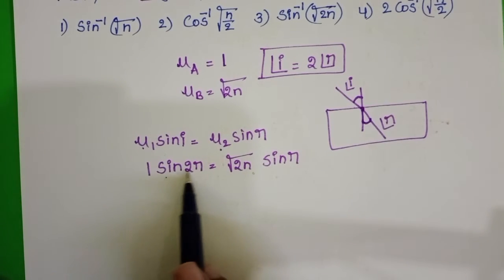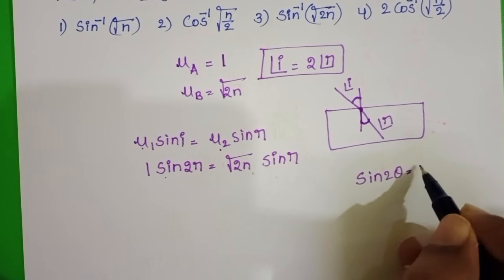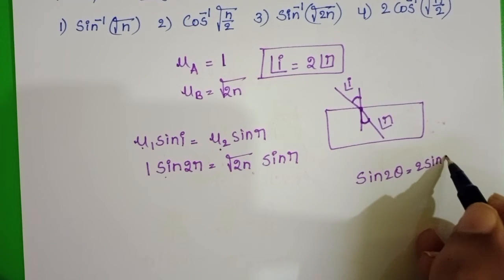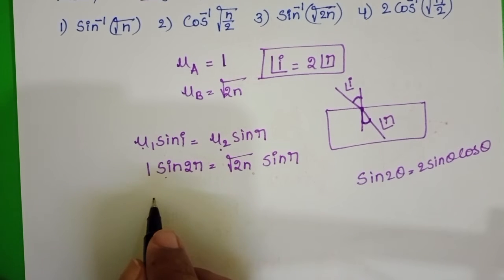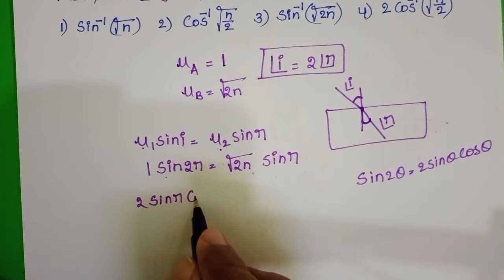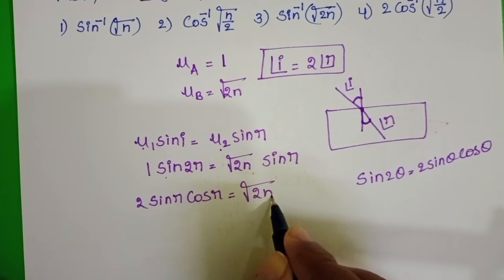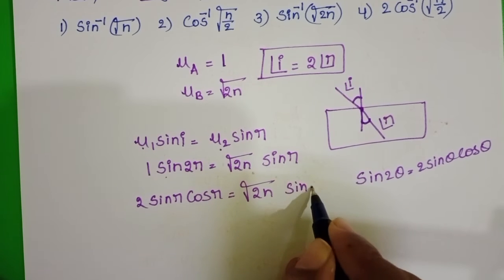This is like sin 2θ. Sin 2θ = 2 sin θ cos θ. Therefore, 2 sin r cos r = √(2n) sin r.